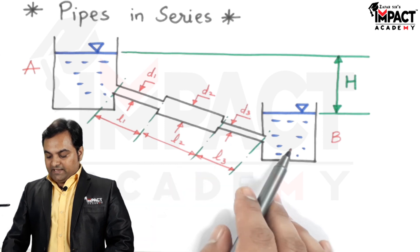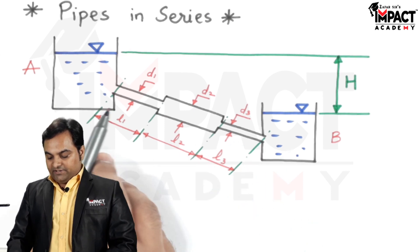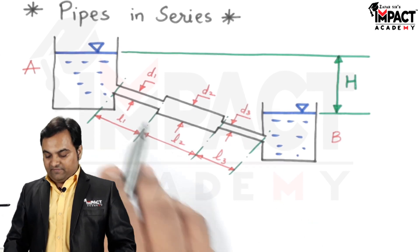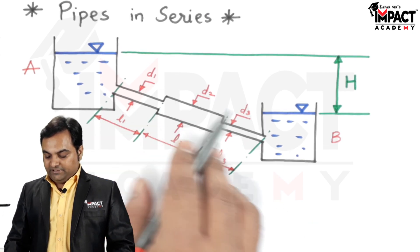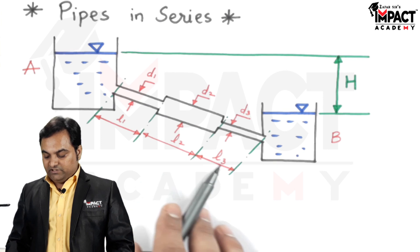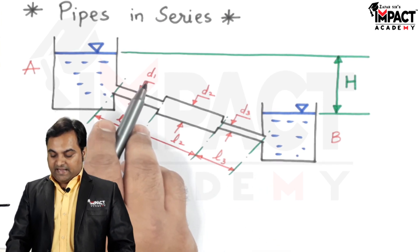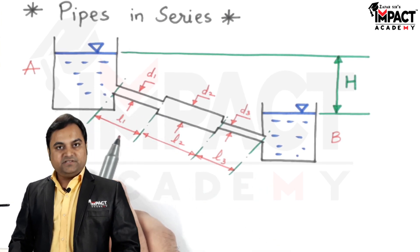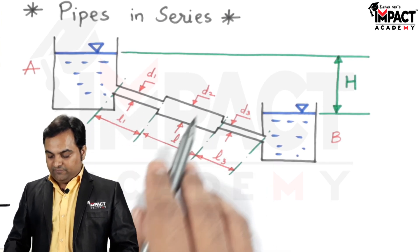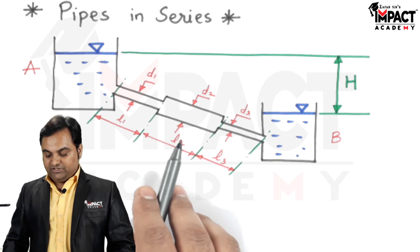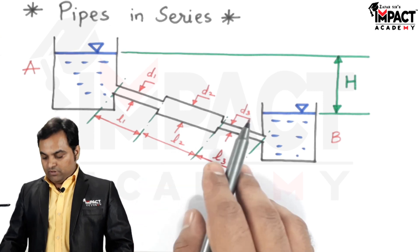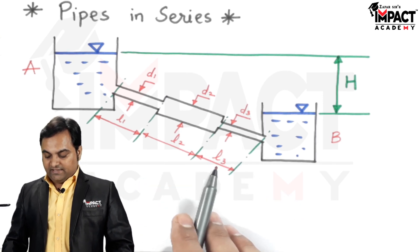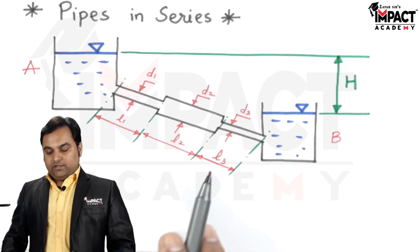These two tanks are connected by three pipelines having different diameters and different lengths. The diameter of pipeline 1 is D1 and length is L1. Similarly, for pipe 2 it is D2 and L2, and for pipe 3 it is D3 and L3.